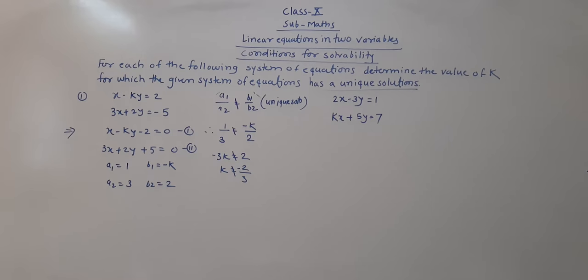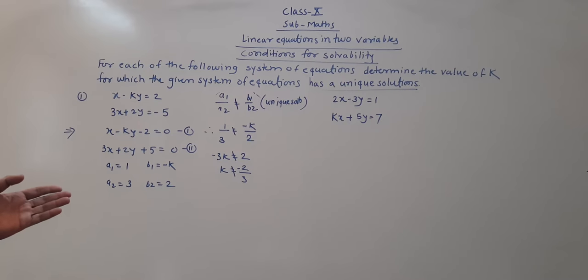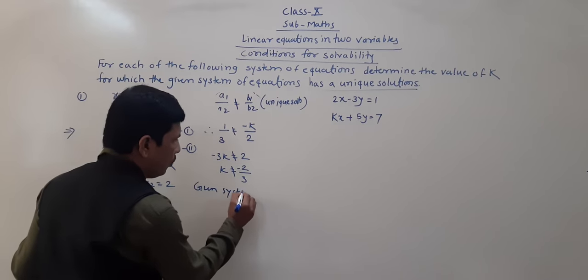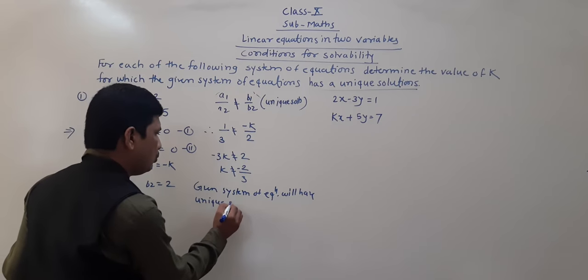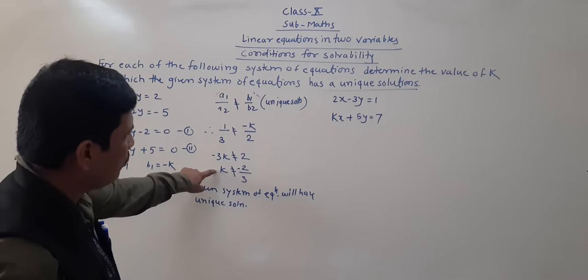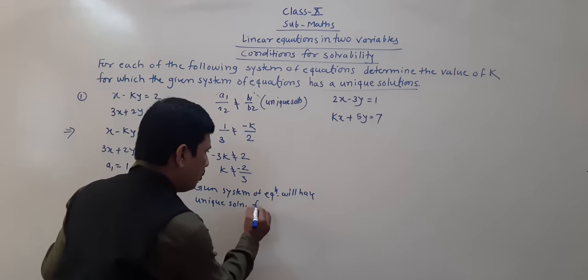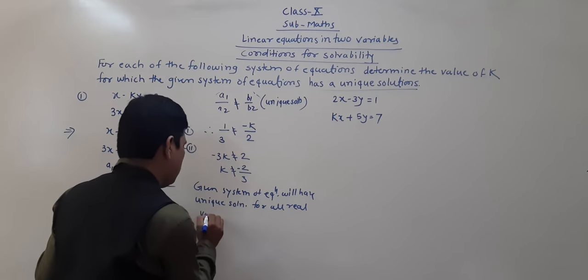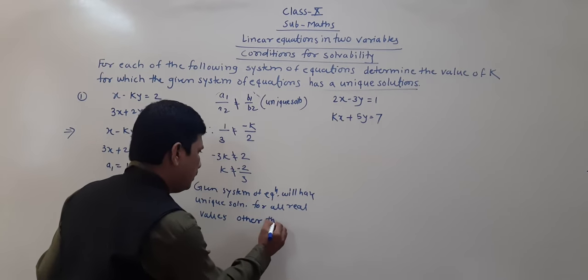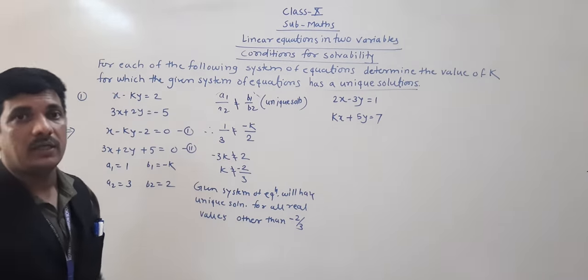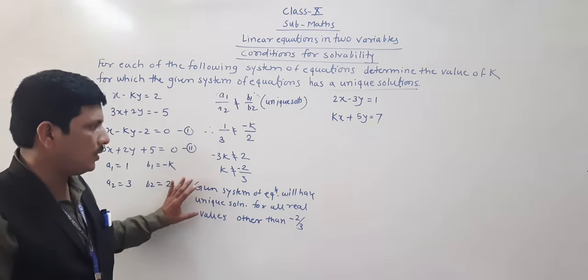For the question — determine the value of k for which the given system of equations has a unique solution — we conclude: k is not equal to minus 2 by 3. The given system of equations will have a unique solution for all real values other than minus 2 by 3.